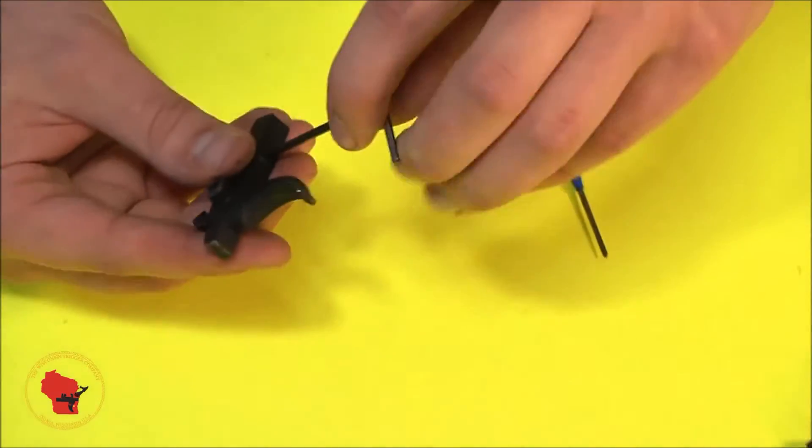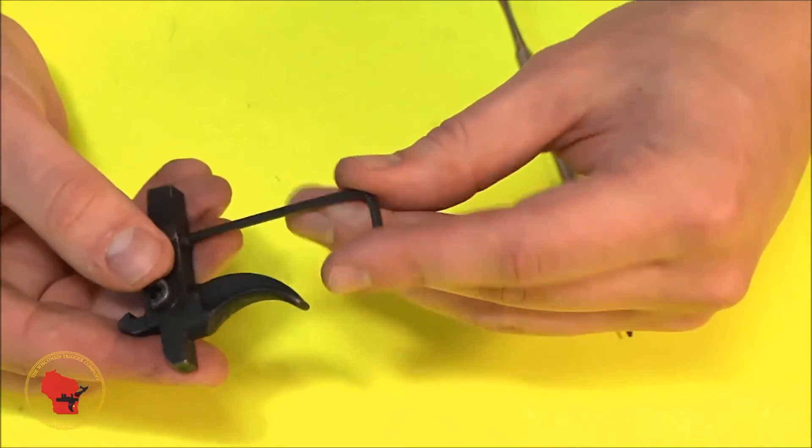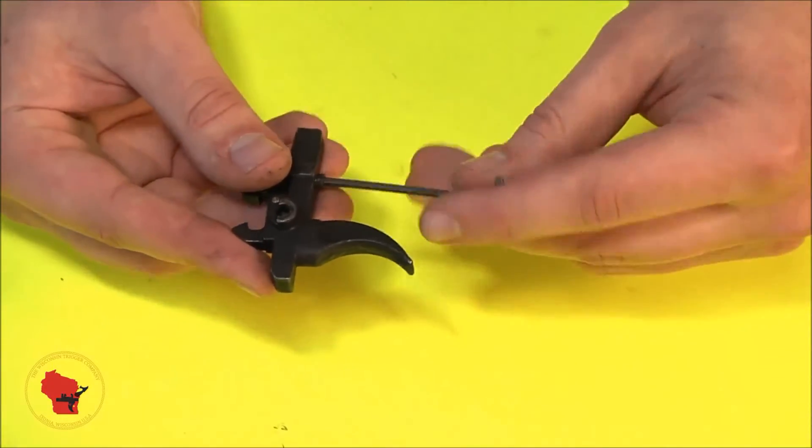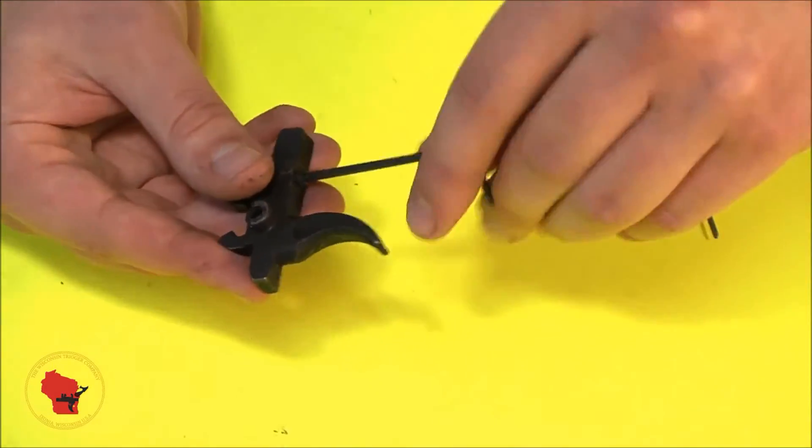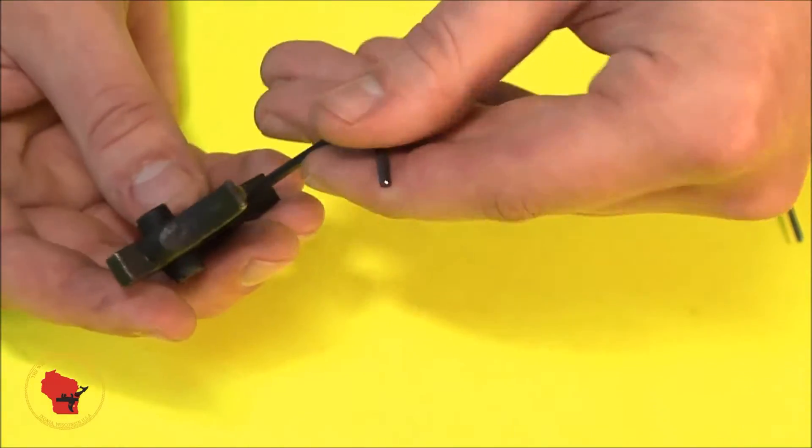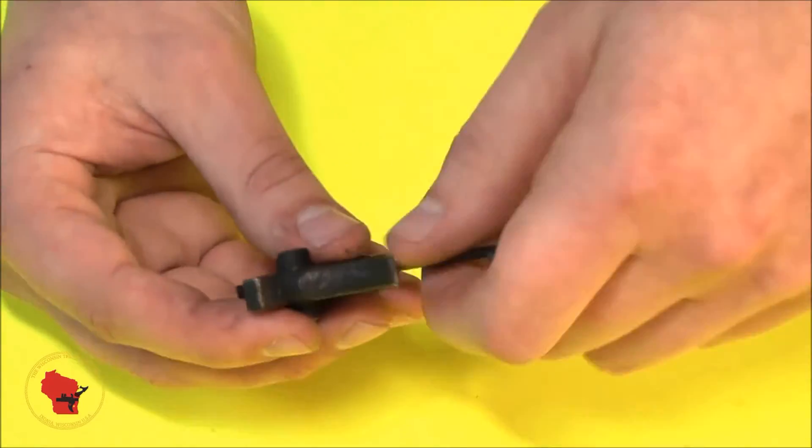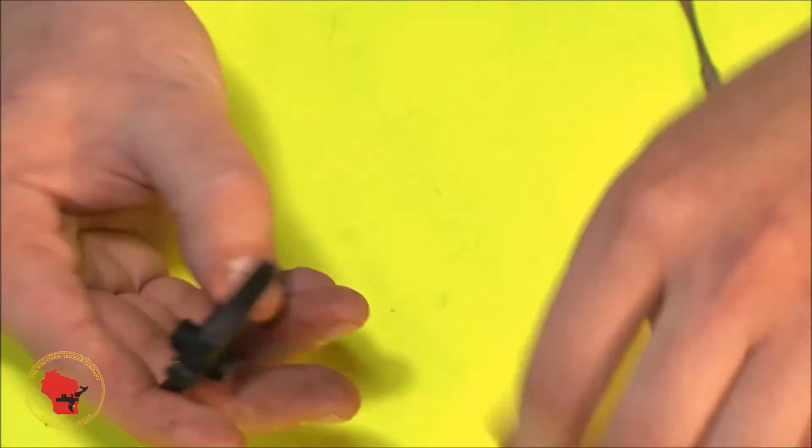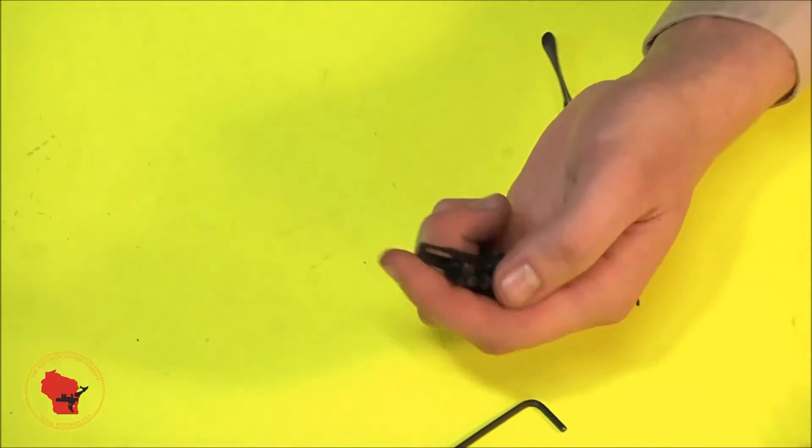Once you have it firmly seated in there, you're going to want to drop a couple of drops of blue or red Loctite on it, and screw the plug in until it is flush with the bottom of the trigger floor. If you go in too far, you can preload the disconnector spring. This will add some pull weight. If you go way too far in, you can coil bind the spring, and the trigger will feel like a rock when you squeeze it.